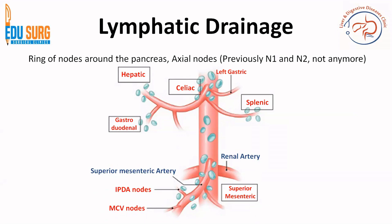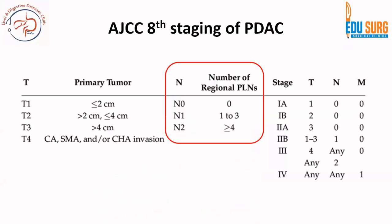So the upper border of pancreas drains into the celiac group of nodes — that is how the lymphatic drainage goes from the previous ring to this ring and finally to the celiac or common hepatic nodes. For the lower border of pancreas, the infrapancreatic group can drain into the superior mesenteric nodes through different lymphatic channels.